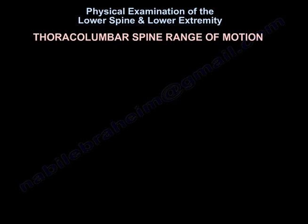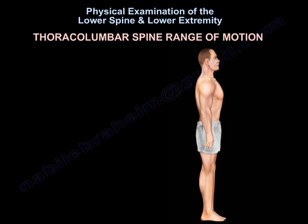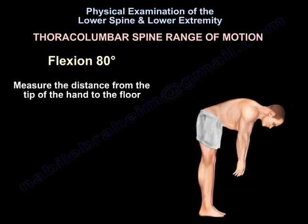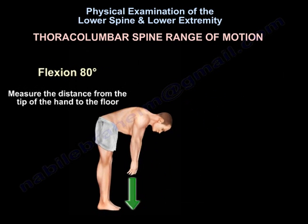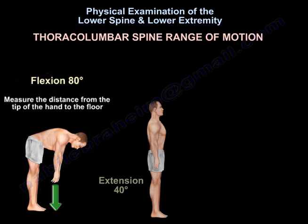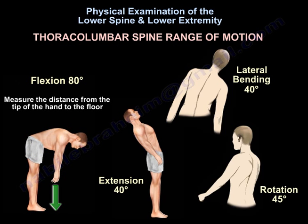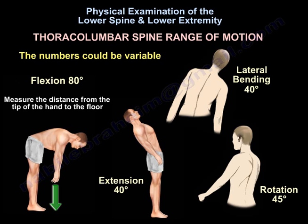Range of motion of the thoracolumbar spine: flexion 80 degrees — measure the distance from the tip of the hands to the floor. Extension 40 degrees. Lateral bending 40 degrees. Rotation 45 degrees. The numbers could be variable.